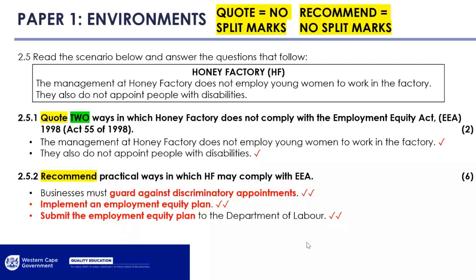Businesses must guard against discriminatory appointments and implement an employment equity plan. This plan is revised every two years and must be submitted to the Department of Labour explaining how they'll work towards a diverse workforce. It is compulsory for businesses with 50 employees and more. For outline for six marks — and if you know the cognitive verbs — you know you need three points. Please write in point form; it's easier for us to read.